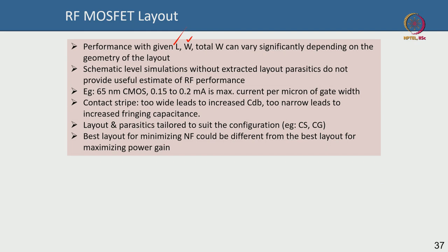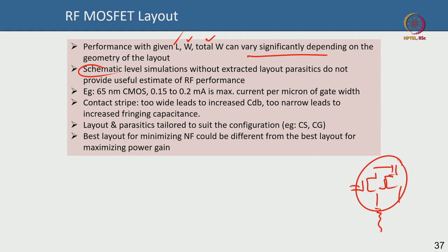Performance with a given gate length and gate width can depend significantly on the geometry of the layout. A schematic-level simulation is very inaccurate at RF frequencies if you do not account for layout and extracted parasitics, because the parasitics can be very different depending on number of fingers, whether the gate connects from both sides, and how many vias there are.